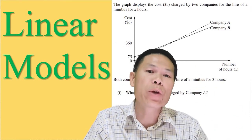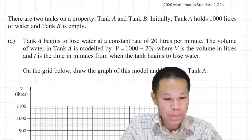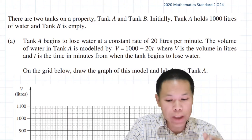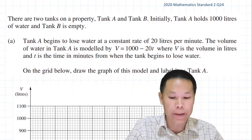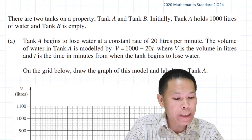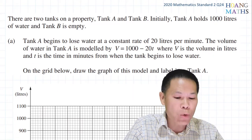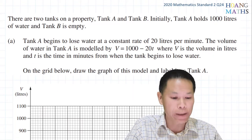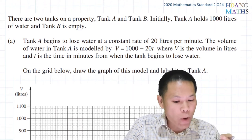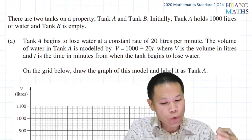Let's go straight into it. There are two tanks on a property: Tank A and Tank B. Initially, Tank A holds a thousand liters of water and Tank B is empty. Tank A begins to lose water at a constant rate of 20 liters per minute. The volume of the water in Tank A is modeled by V = 1000 − 20t, where V is the volume in liters and t is the time in minutes from when the tank begins to lose water.